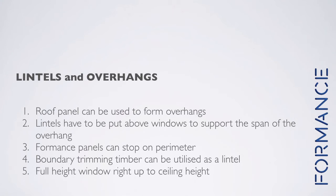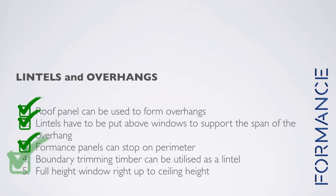So let's summarize what we talked about regarding lintels and overhangs. First, roof panels can be used to form overhangs — in this instance a lintel has to be put above the window to support the span of the overhang. But if we stop forming panels at the perimeter and have the boundary trimming timber continuous over the openings, we can utilize it as a lintel, allowing for full height windows right up to the ceiling height.